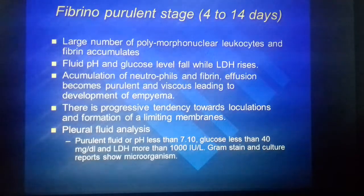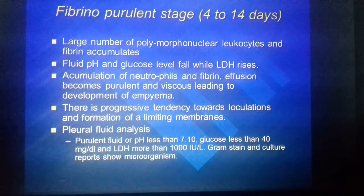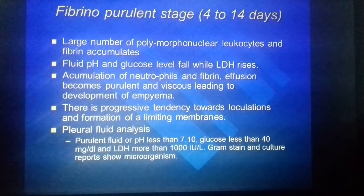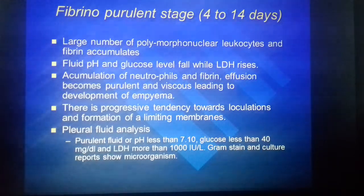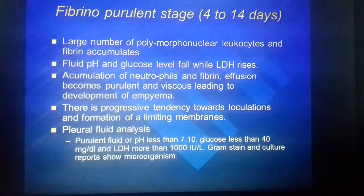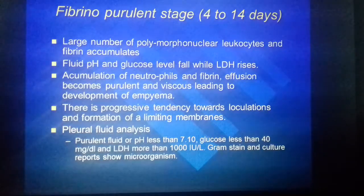Pleural fluid analysis in the fibrinopurulent stage: pH less than 7.10, glucose less than 40, and LDH more than 1000. Gram stain and culture reports show microorganisms.